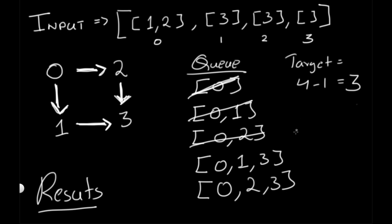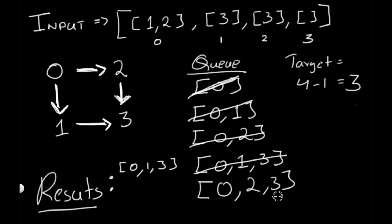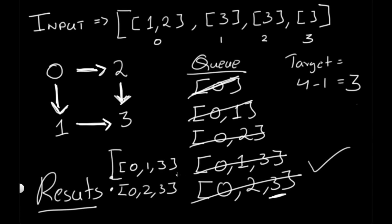Now when we pop [0, 1, 3], the last element is 3, which equals our target. So we've reached from the start to our target and we add it to our results. Similarly, we pop [0, 2, 3] and its last element is also 3, so we add that to results as well. The queue is now empty, so we're done and we have our answer.